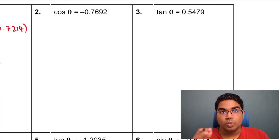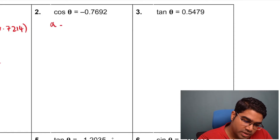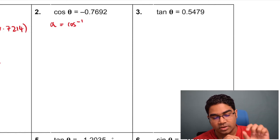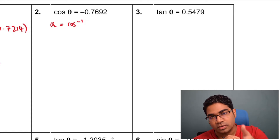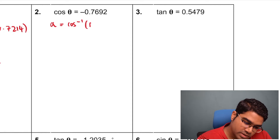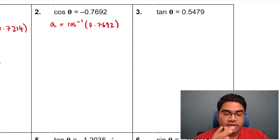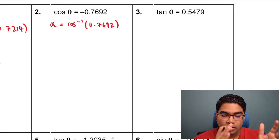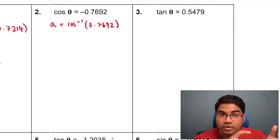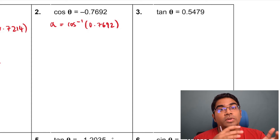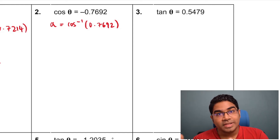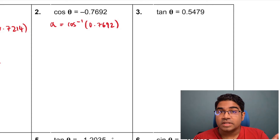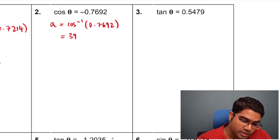Now let's try the second question — we apply the same concept. First, find alpha. Alpha equals inverse cos, so this time press shift cos instead of shift sine. The value here will be 0.7692. Remember, when finding alpha there is no negative ratio — alpha is always positive. Therefore, ignore the negative sign when keying into the calculator, otherwise you will find only one value of theta and miss the other. Key in the positive value 0.7692 and you get alpha equals 39.7 degrees.